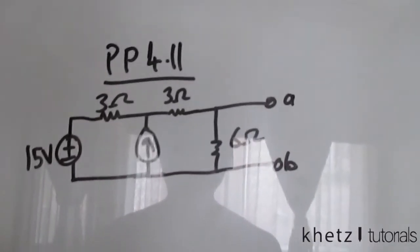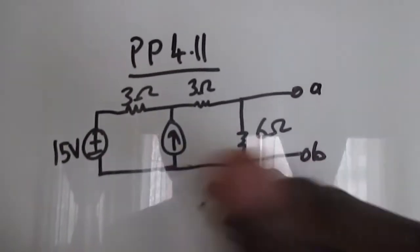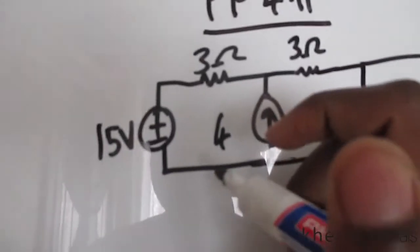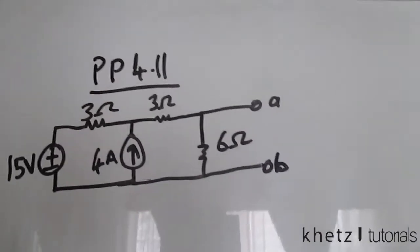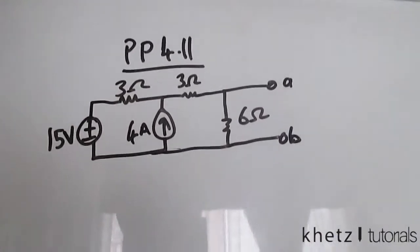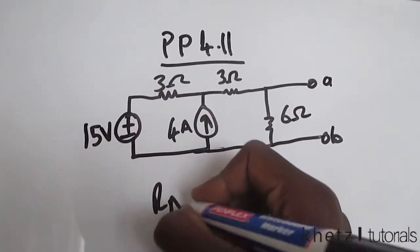Welcome to GATS Tutorials, and in this video we're going to be covering practice problem 4.11. In this problem we are asked to find the Norton equivalent of this circuit. So let's start by finding the Norton equivalent resistance.